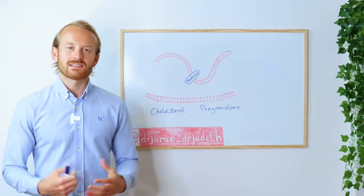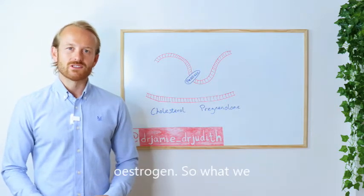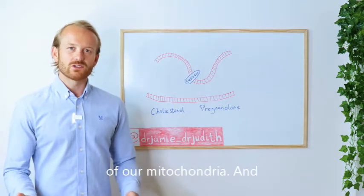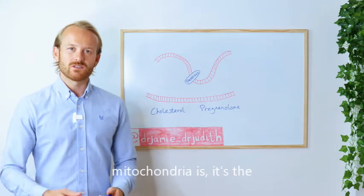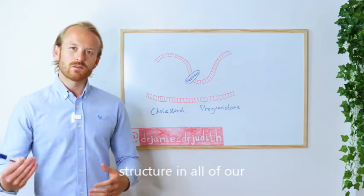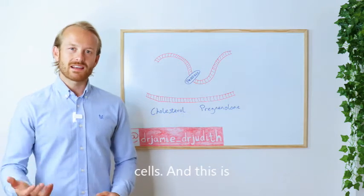Hormones like testosterone and estrogen. So what we have here is a snapshot of our mitochondria. If you don't know what a mitochondria is, it's the energy-producing structure in all of our cells, and this is actually where we produce hormones or steroid hormones in the body.